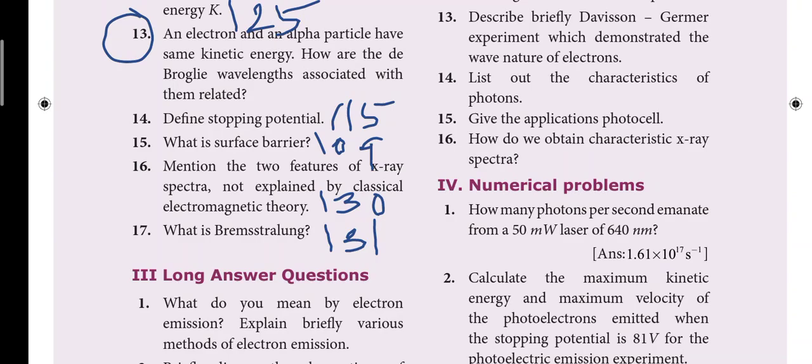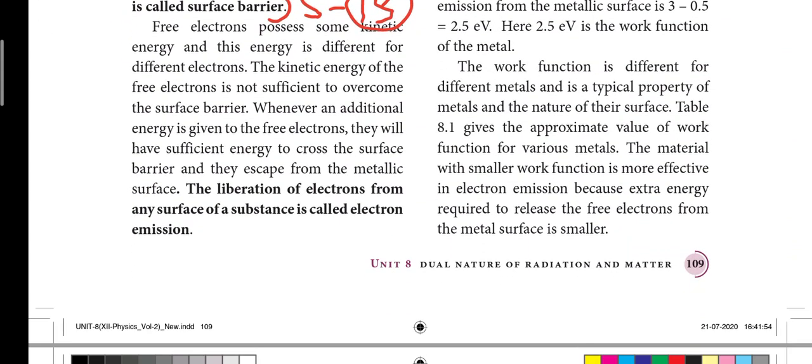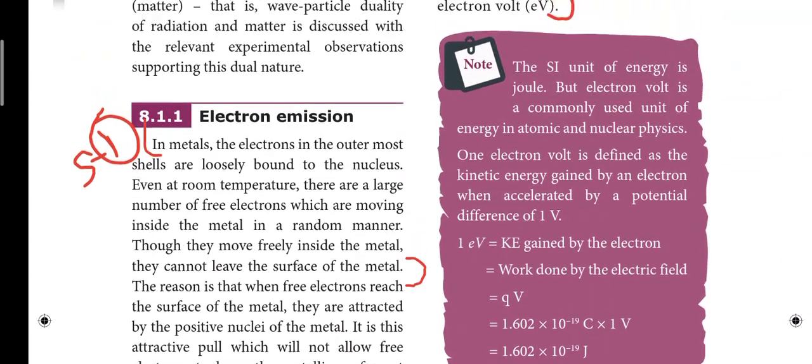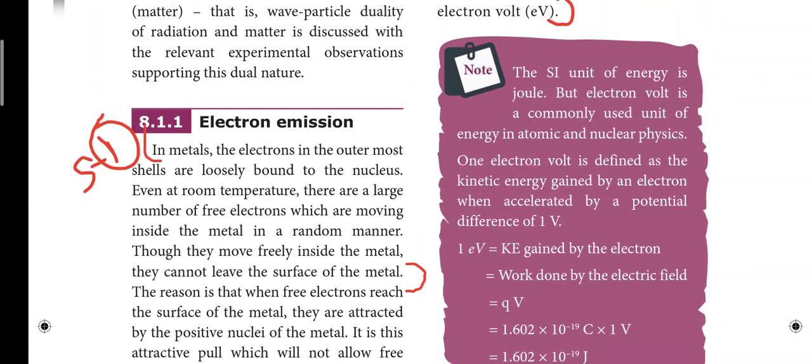So now page number 109, so on the surface barrier answer, in the black letters, you know, so on the 15th question answer. Next, on the left, electron emission heading, first line, in metals the electrons are loosely bound, that is the surface of the metal. So on the left, that is the first answer.